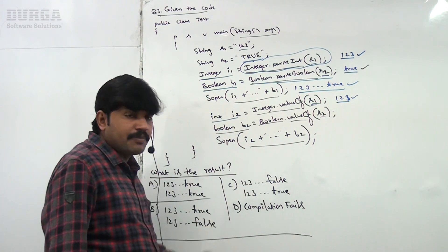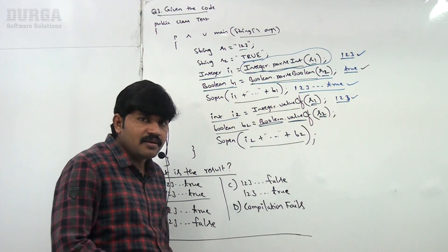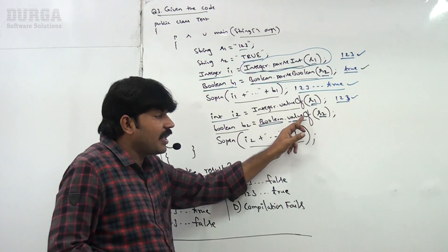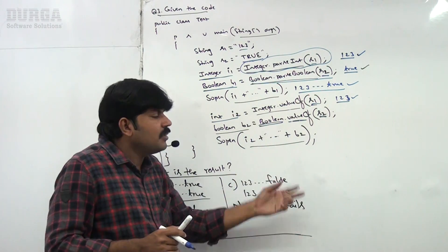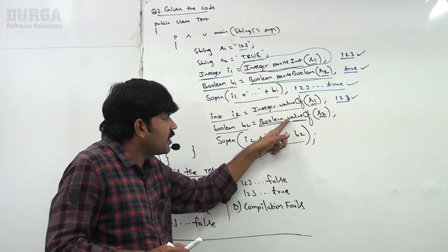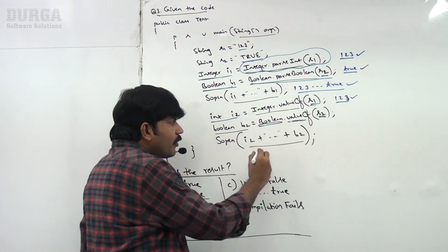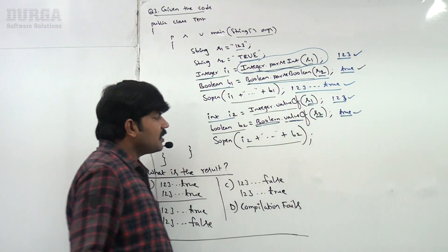Same, Boolean b2 equals Boolean.valueOf(s2). Boolean.valueOf(s2), s2 means "TRUEG" sir. valueOf method to convert the String to Boolean object. Now Boolean object true will be created sir, but this Boolean object we are assigning to Boolean primitive. That's why auto-unboxing is going to happen. Now true is the answer for this sir.